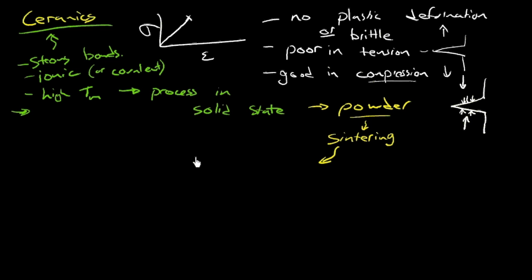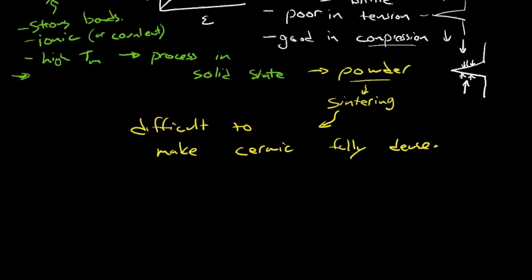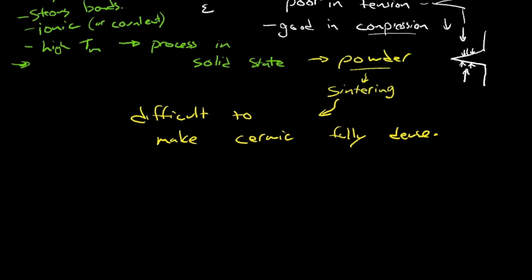But the downside to all that is that it's very, very difficult to make a ceramic completely dense or difficult to make a ceramic, we often say, fully dense. Fully dense, or another way of looking at it is instead of the density, ceramics have a lot of porosity or are susceptible to or very sensitive to porosity. And what's a pore? A pore is like a hole in the material, basically. You know, you have a sponge, for example, in your kitchen, perhaps.